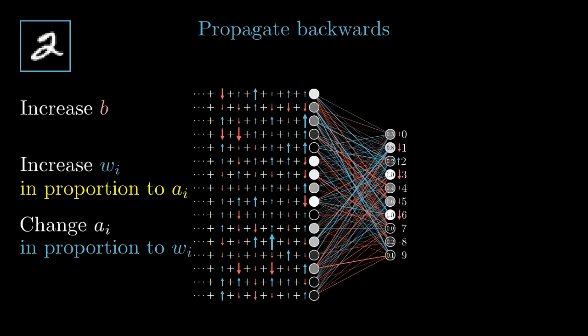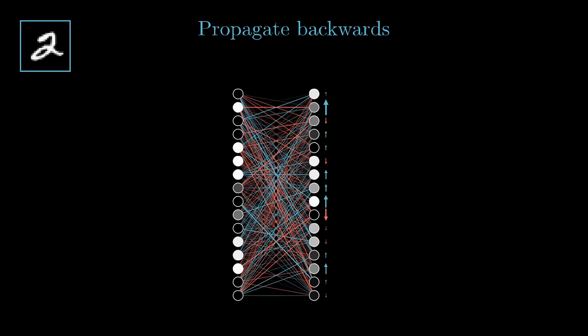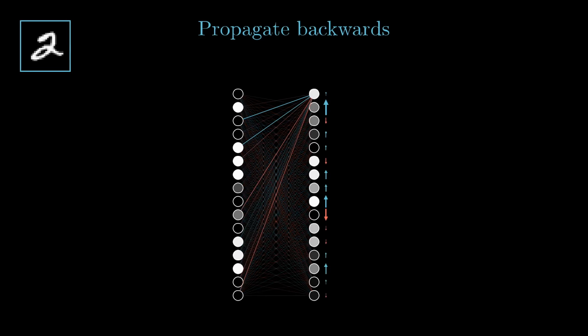By adding together all these desired effects, you basically get a list of nudges that you want to happen to this second to last layer. And once you have those, you can recursively apply the same process to the relevant weights and biases that determine those values, repeating the same process I just walked through and moving backwards through the network.